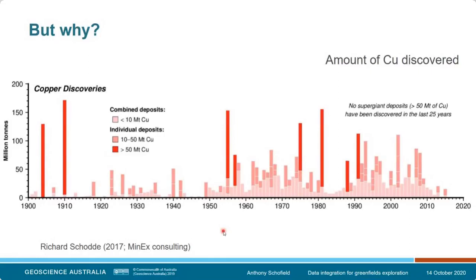To fuel that demand we need to mine it — we can recycle some but we need to produce new copper. This graph shows the amount of copper discovered globally since 1900. The darker colours represent the bigger deposits — things like the big porphyry copper deposits, Olympic Dam, and so on. A lot of our copper resources come from the discovery of really big supergiant deposits, and we haven't found one of those in the last 25 years. So it's clear we need to find more, and not just more but bigger deposits.